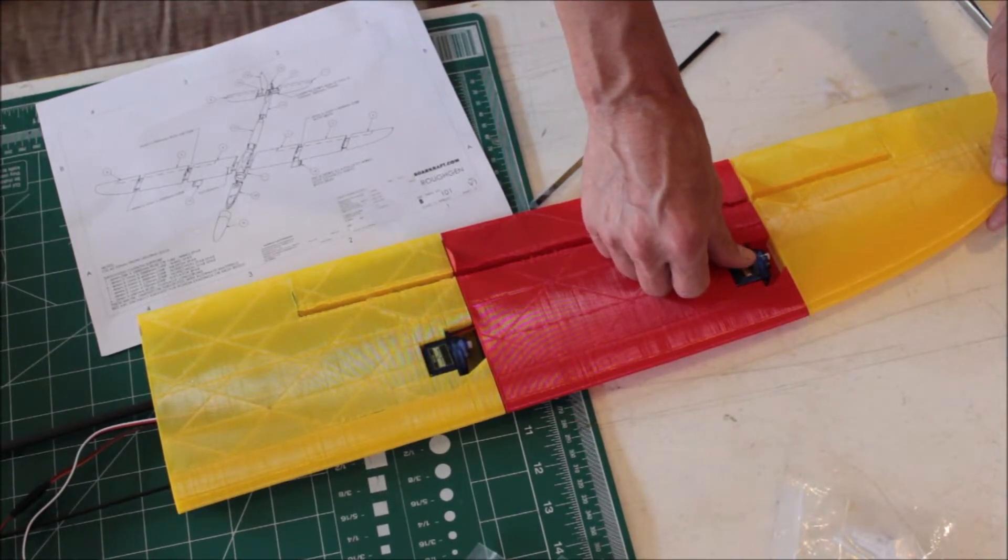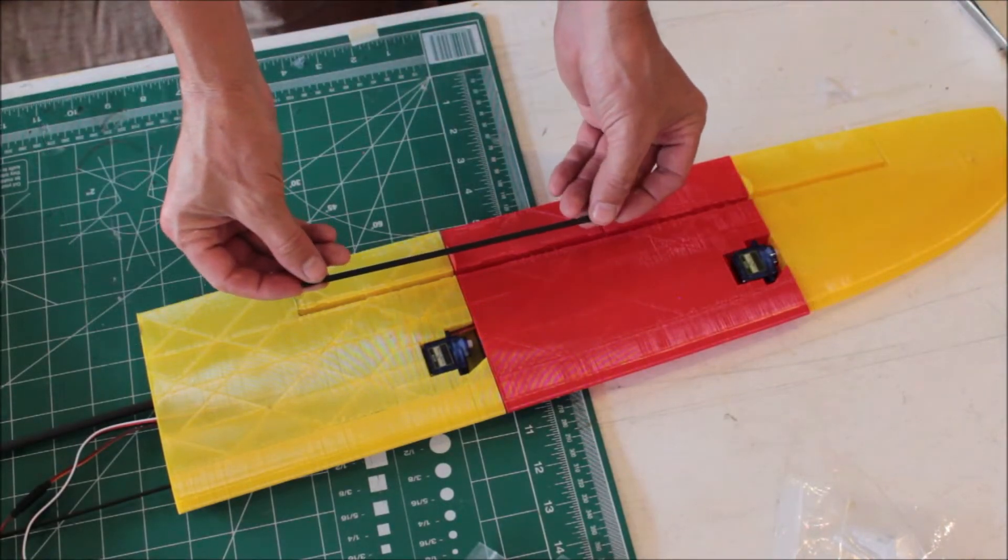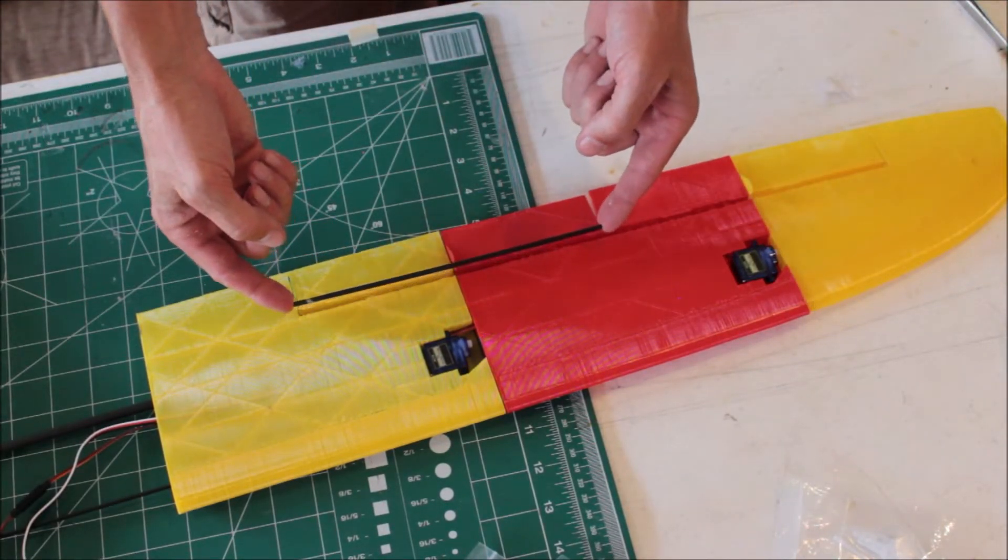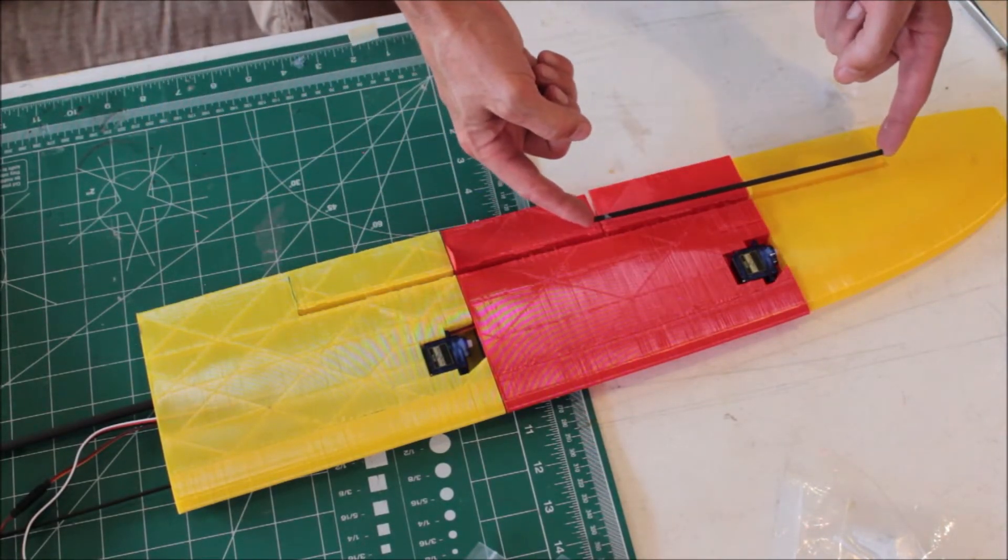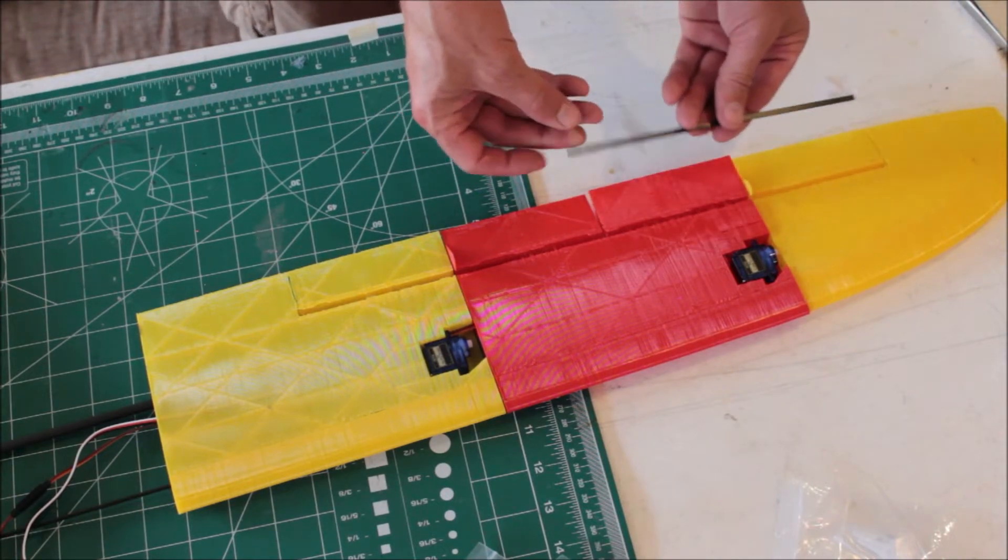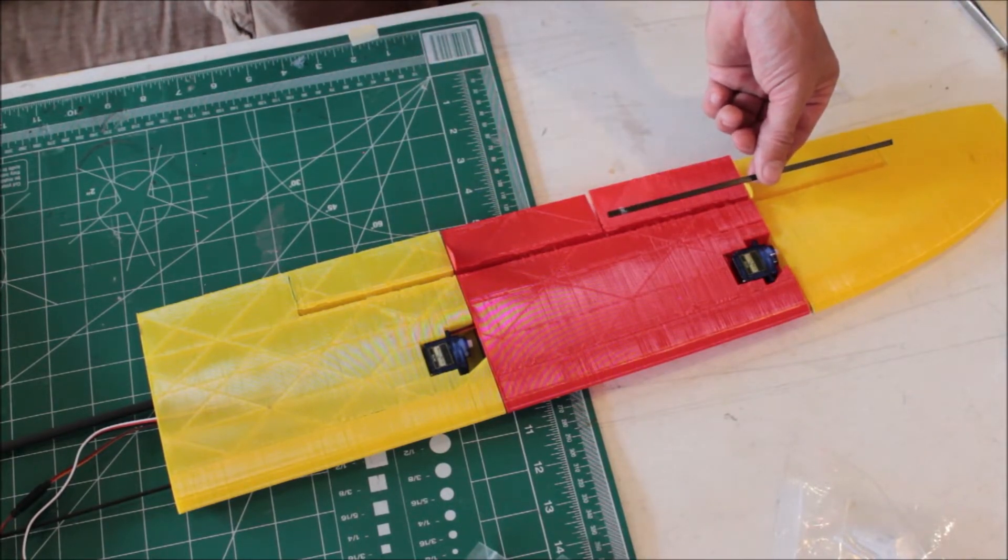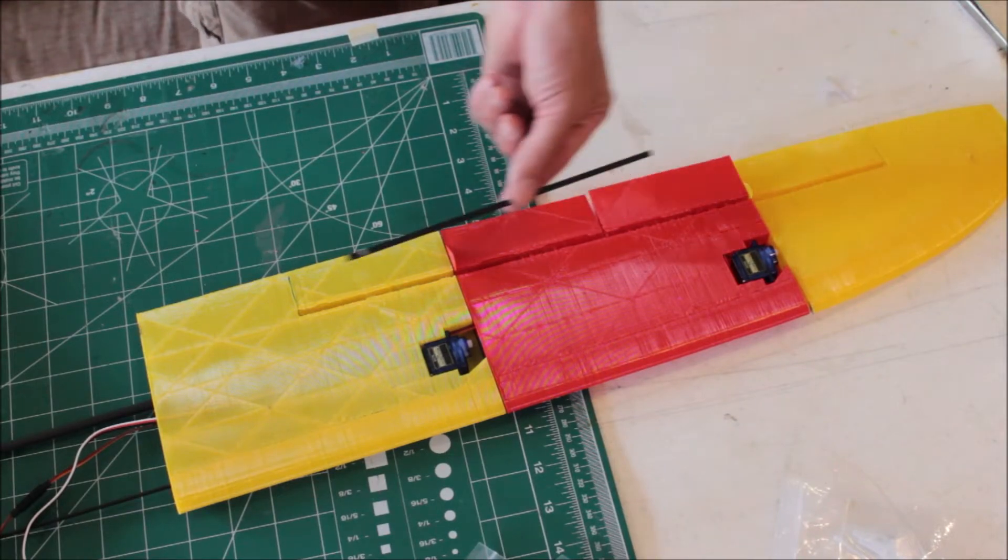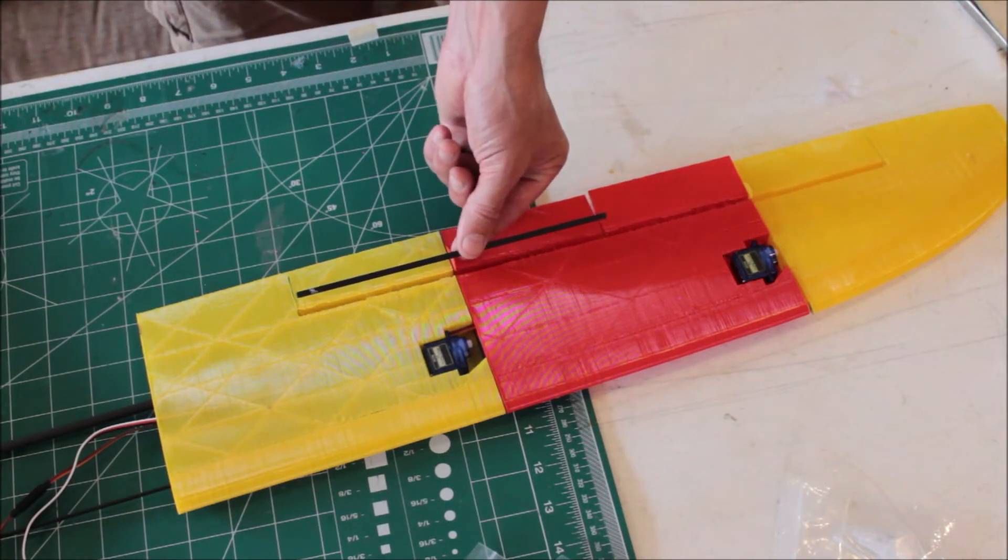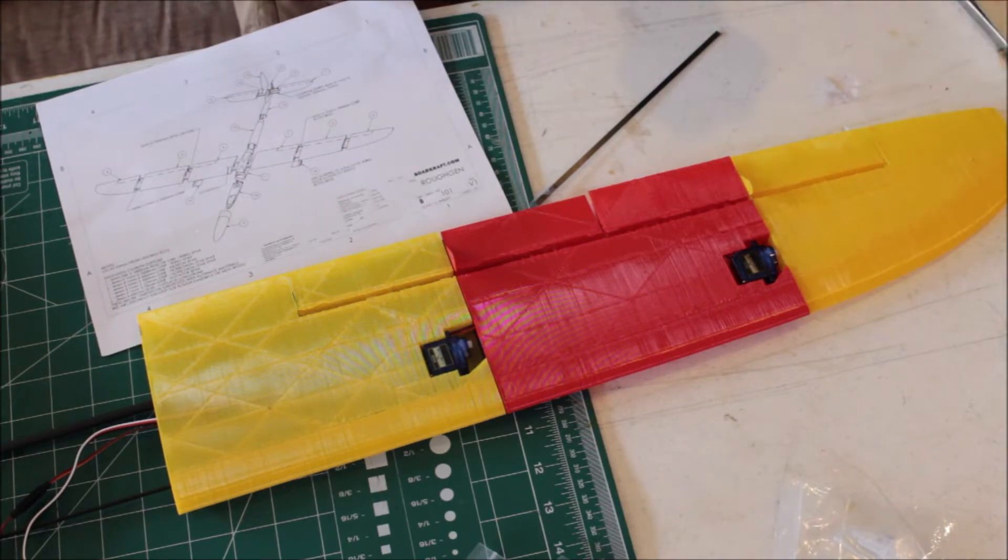The carbon stiffener for the flap and the aileron are 200 millimeters long, and it might be slightly shorter than 200 millimeters on the outside, a little bit longer on the inside. That's for servo build.